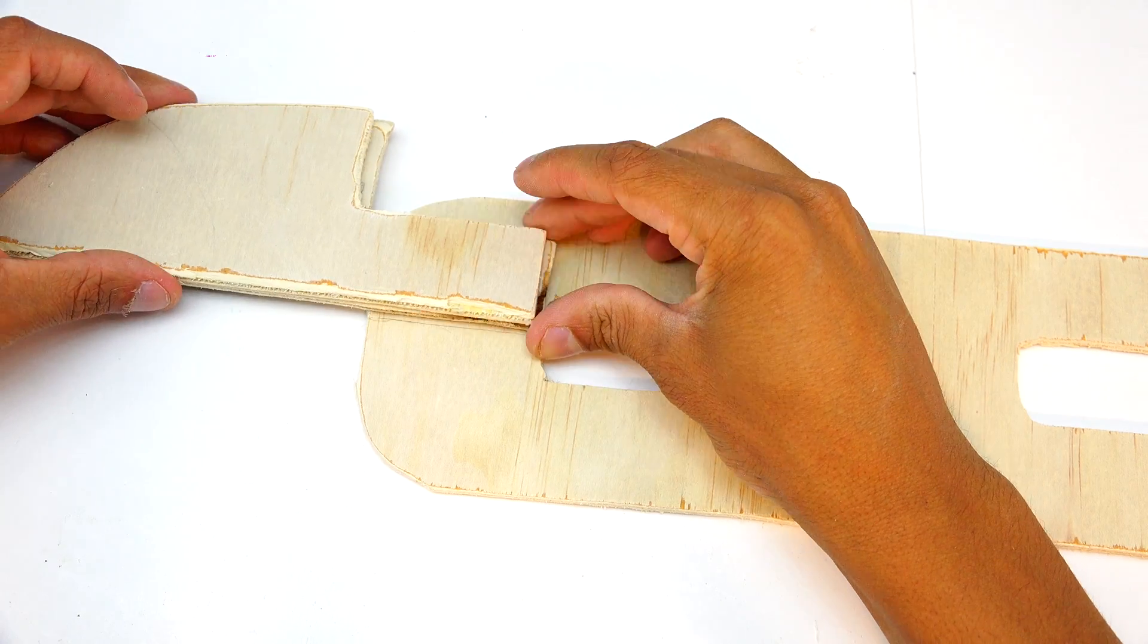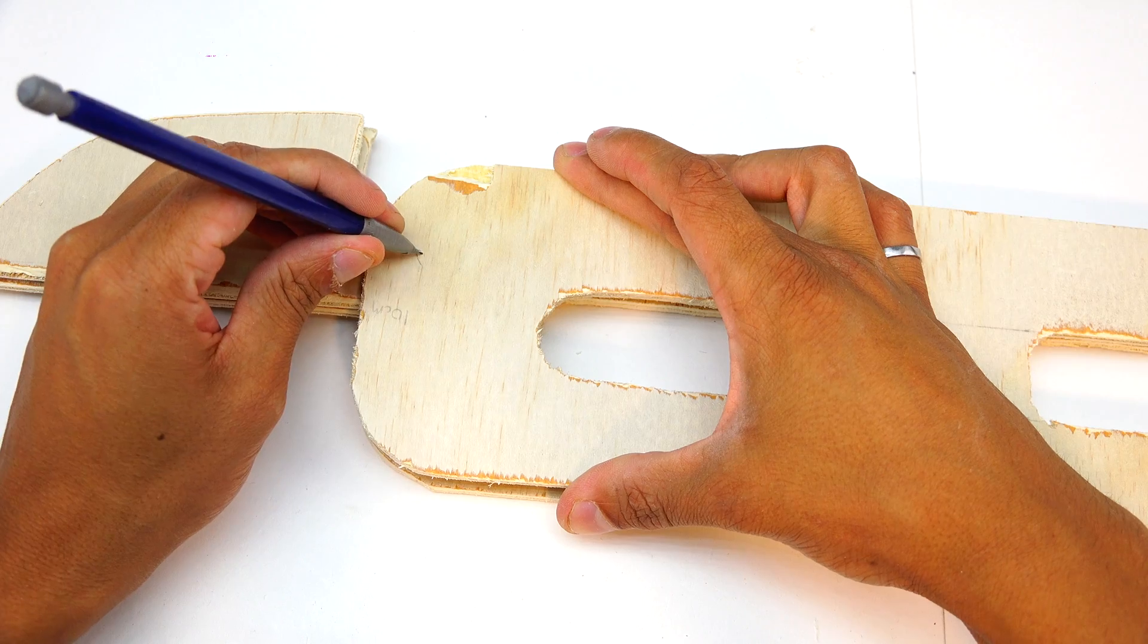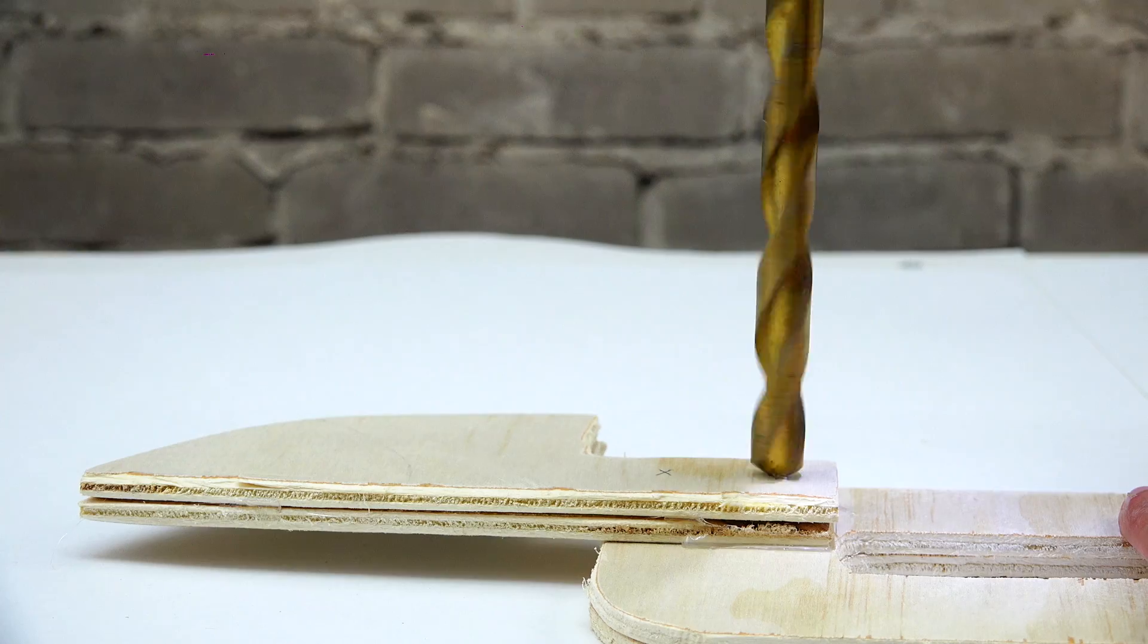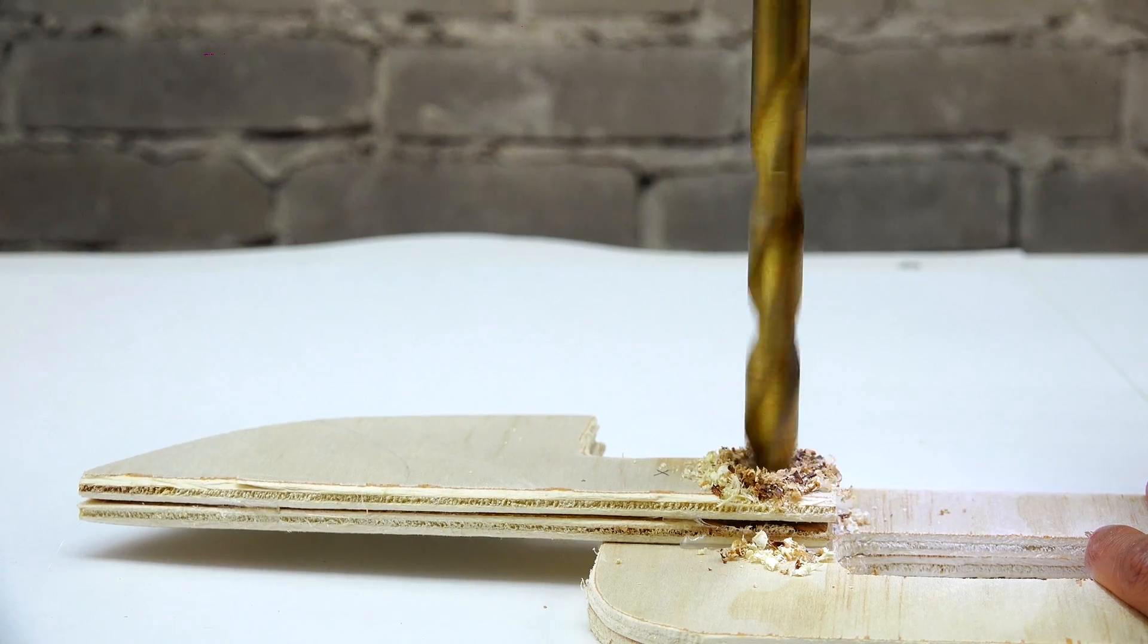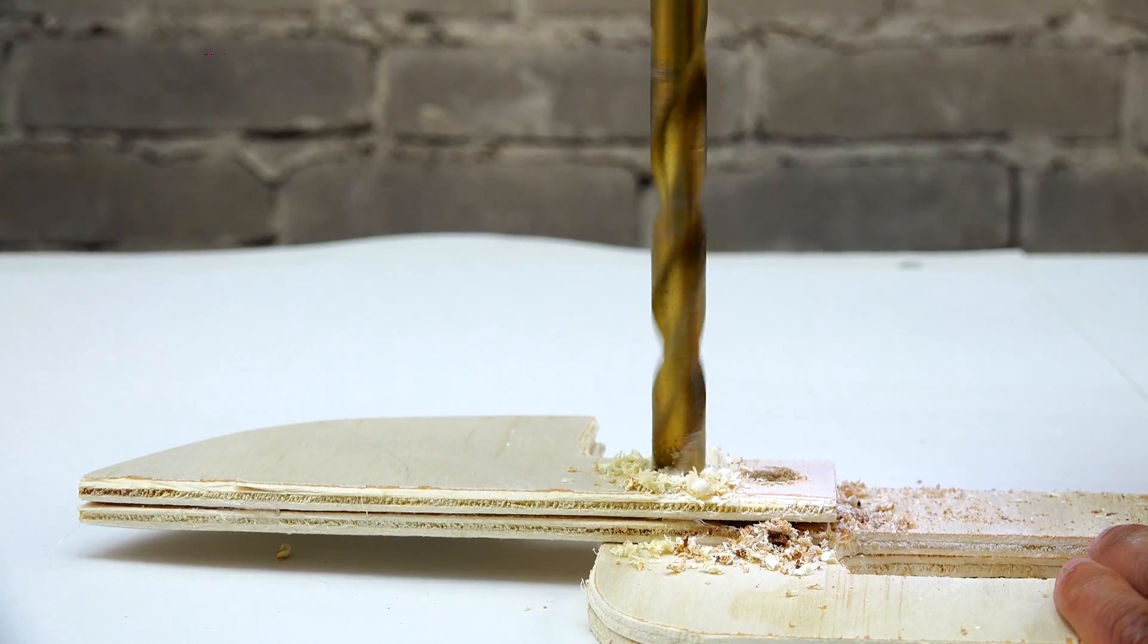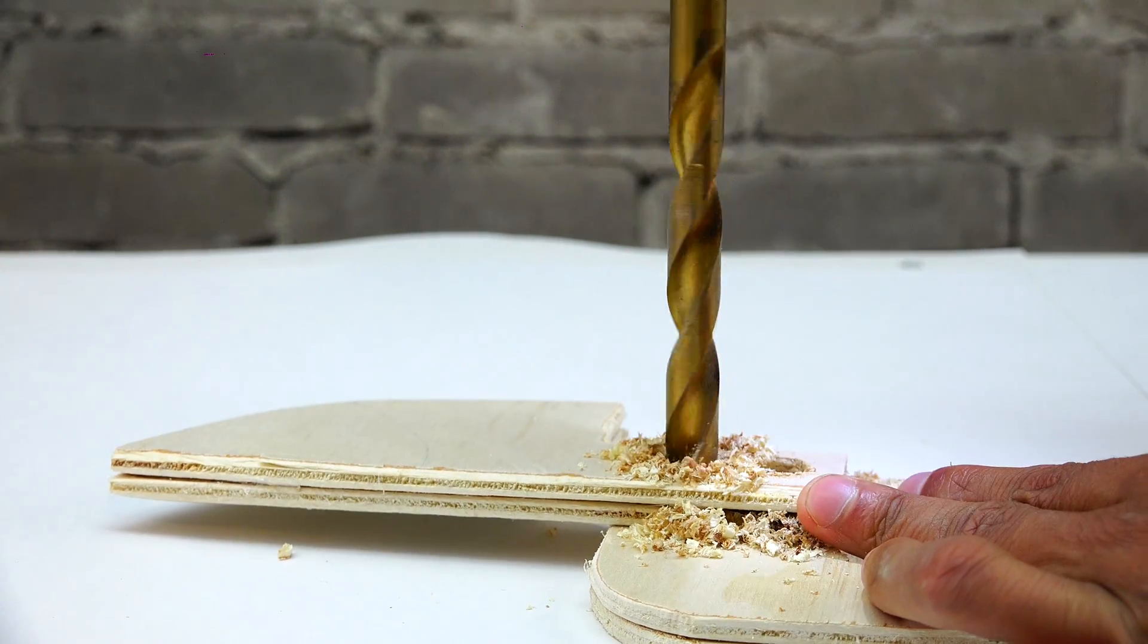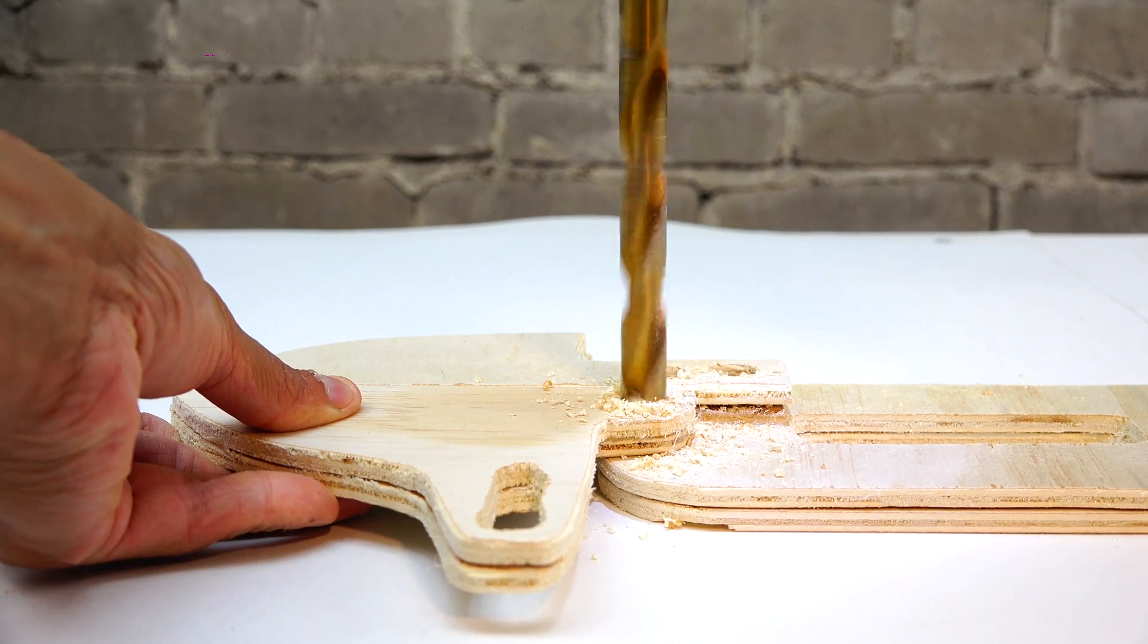Next I'm going to position the pieces on top of each other and line them up and mark where I want some holes to be. Now in these holes we're going to put dowels through them so you want to drill them the same size as the dowel so the dowel fits snugly in those holes. The rotating piece we only need to put one hole in there because that piece is going to rotate.